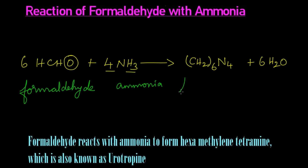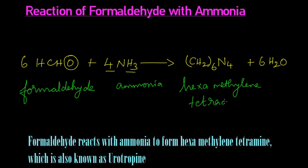The name 'hexamethylene' comes from CH2, which is called methylene, and hexa because six molecules are there. Four amines are there, so 'tetra amine' — hexamethylene tetramine. To summarize: formaldehyde reacts with ammonia to form hexamethylene tetramine. This is also called urotropin.